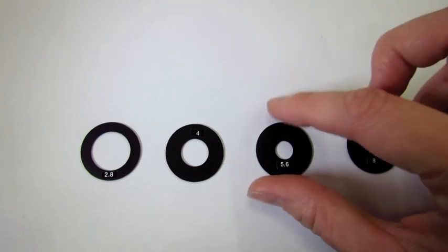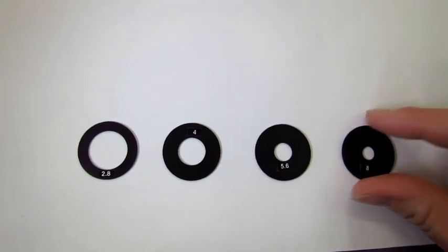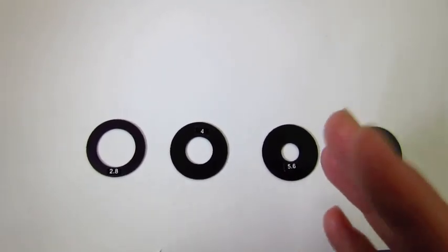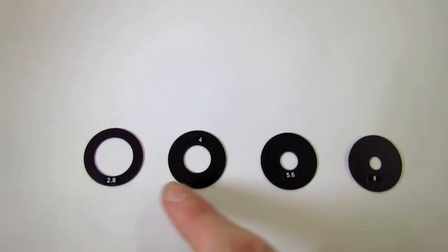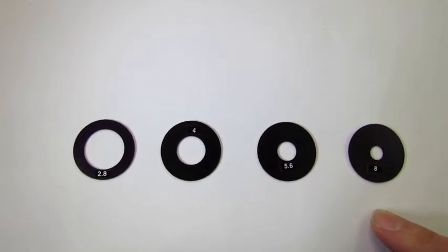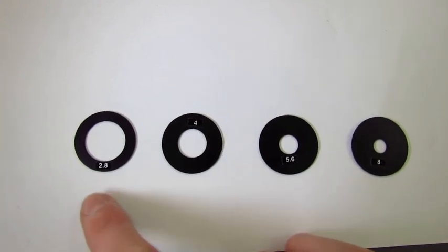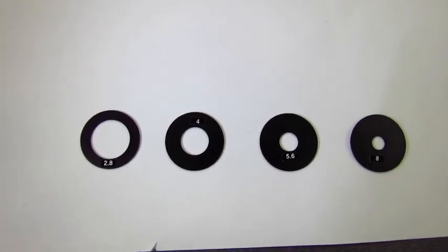So that's an example of what aperture rings would look like. They're usually blades and the blades sort of move around to make the hole bigger or smaller but the theory is the same, it's these different size holes controlling the amount of light.